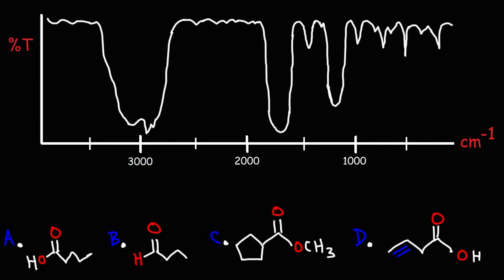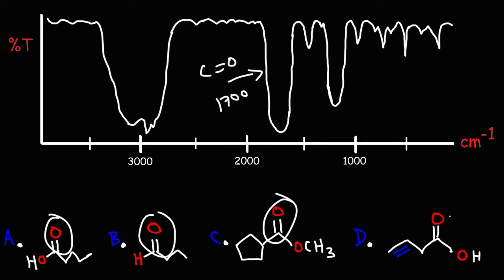Given this IR spectrum, which of the following molecules would best correspond to this graph? One of the first things we can see is that we have a carbonyl C=O stretch near 1700. All of the molecules in our answer choices contain the carbonyl functional group, so that really doesn't help us.